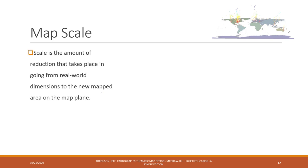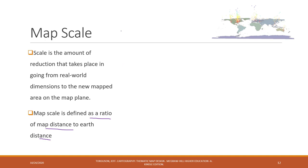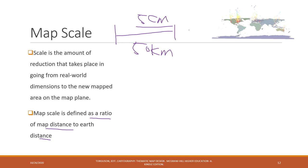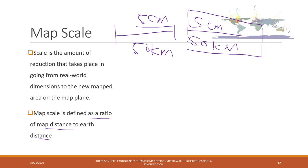Let's talk about map scale. Map scale is very important — it is the amount of reduction that takes place going from the real world into the map body. In other words, it is the ratio of the map distance to the earth distance. For example, if a road segment is 50 kilometers on the earth, it might be just five centimeters on the map, so the scale would be five centimeters divided by 50 kilometers.